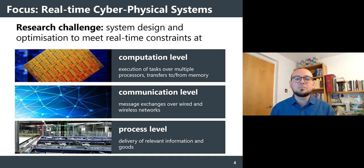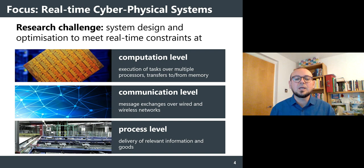The research challenge we are addressing is to design and optimize such systems so that they can meet real-time constraints at computation, communication, and process levels. At the computation level, constraints include deadlines on the execution of tasks over multiple processors and data transfers to and from memory. Communication level includes exchanges of messages over wired or wireless networks in a distributed environment. At the process level, it's related to deadlines for delivery of relevant information and goods over the actual plant that the embedded systems are controlling.